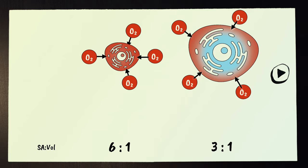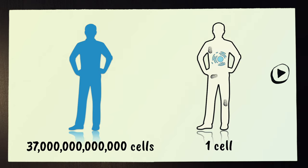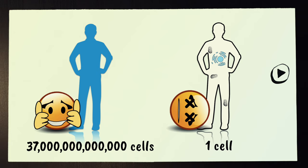This is what limits the maximum size of a cell. Since our bodies have to be made of many tiny cells, it's important that the materials those cells need are transported directly to them.